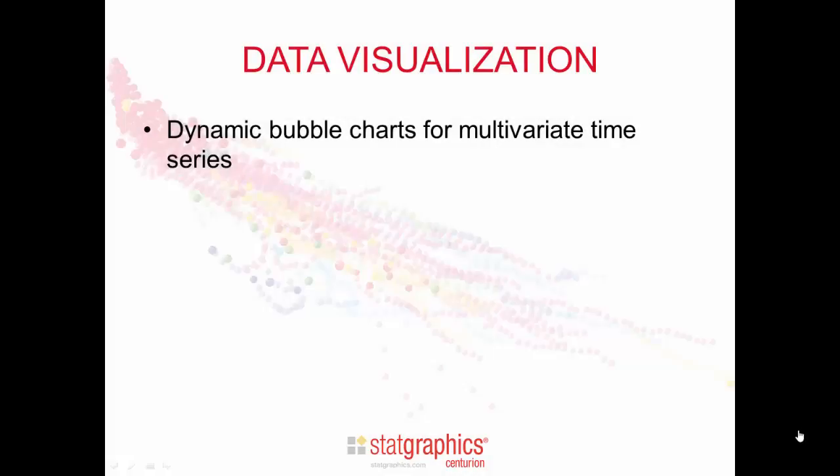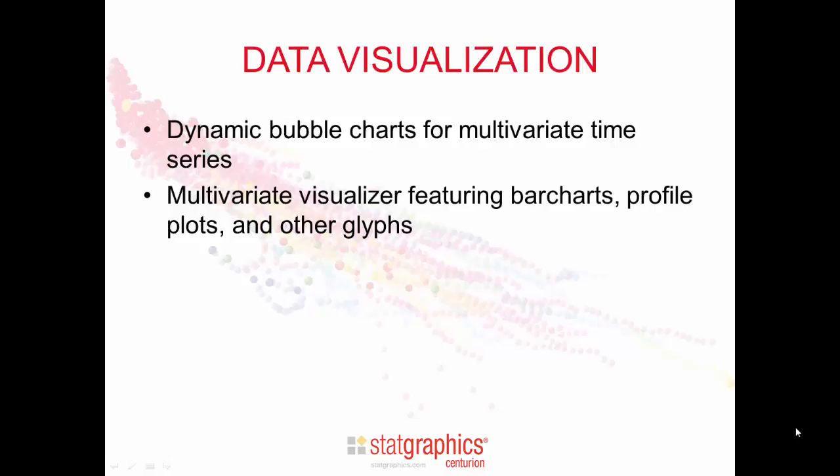An area in which StatGraphics has always excelled is that of data visualization. Version 17 adds many new capabilities. Some of these include dynamic bubble charts for displaying multivariate time series, a multivariate visualizer where you can choose either a bar chart, a profile plot, a strip plot, or some other glyph, new demographic maps which use gradient fills to display the value of a selected variable.